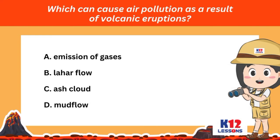Which can cause air pollution as a result of volcanic eruptions? A. Emission of gases. B. Lahar flow. C. Ash cloud. D. Mud flow.